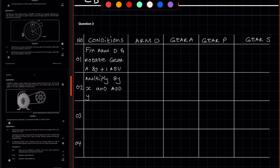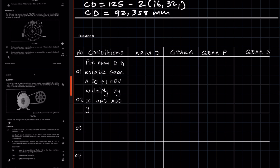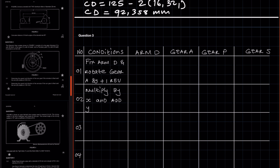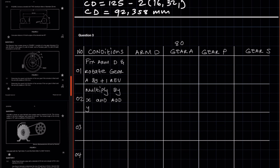You have the members: arm D, gear A which is the annulus, gear P the planetary gear, and gear S the sun gear. I like to label the number of teeth of each gear at the top of each column. For this epicyclic gear train, the annulus has 80 teeth, the planetary gear has 20 teeth, and the sun gear has 40 teeth.